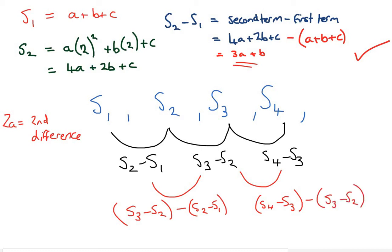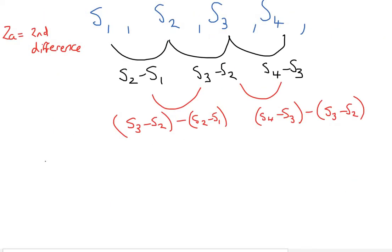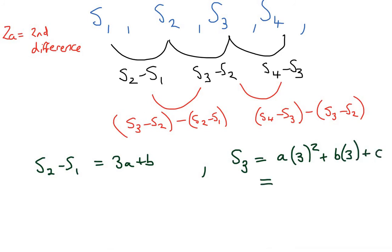Now, if your sequence is quadratic, these two should be exactly the same. So, we only need to work out one of them. So, let's do that. Okay, first, we remember that s2 minus s1 is 3a plus b. And now, we just need to work out s3. Well, s3 is a lots of 3 squared plus b lots of 3 plus c. And this equals, well, 3 squared is 9, so it's 9a plus 3b plus c.